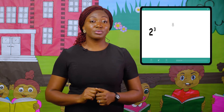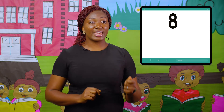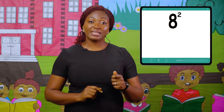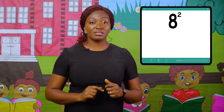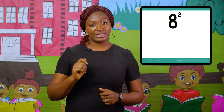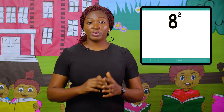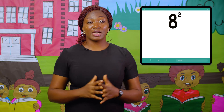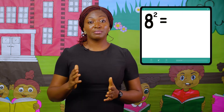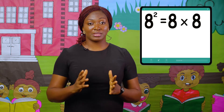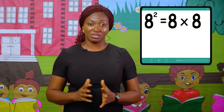Another example is 8 raised to the power of 2. Here, 8 is the base number and 2 is the index. If we expand this out, we have 8 multiplied by itself — that's 8 times 8, which is 64.